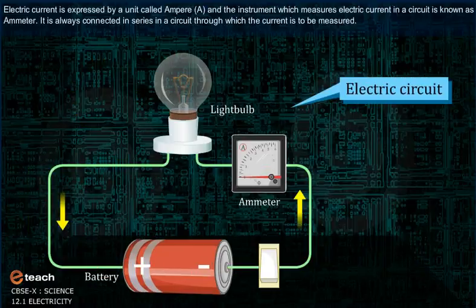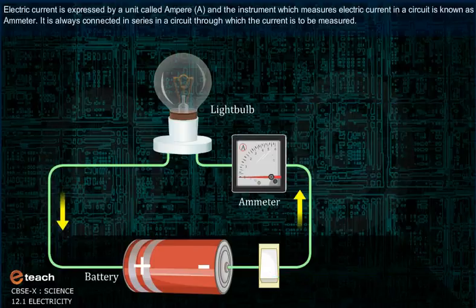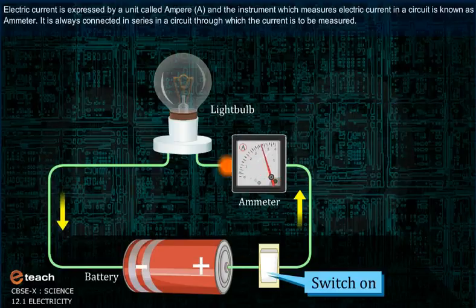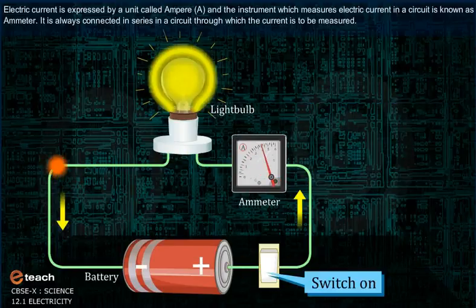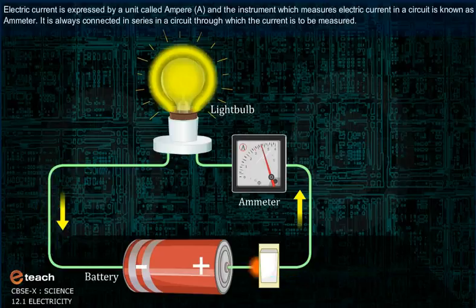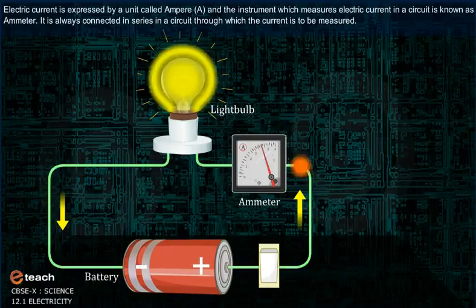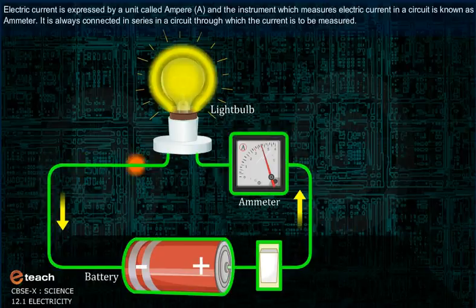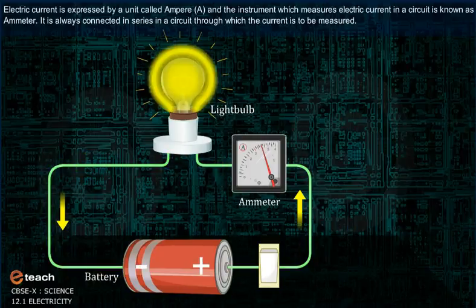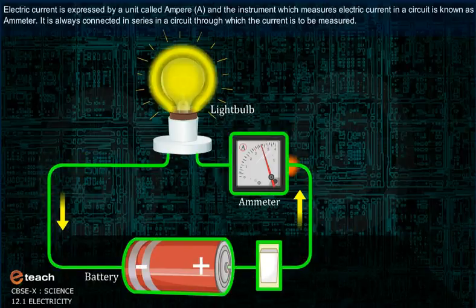The electric current is expressed by a unit called ampere, and an instrument which measures electric current in a circuit is known as ammeter. It is always connected in series in a circuit through which the current is to be measured.